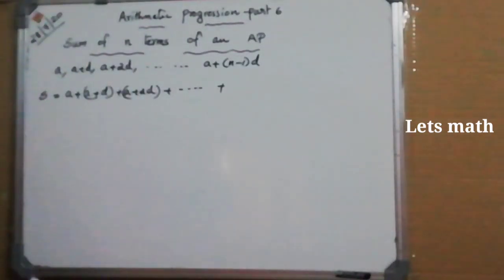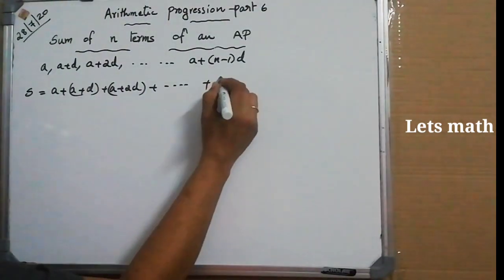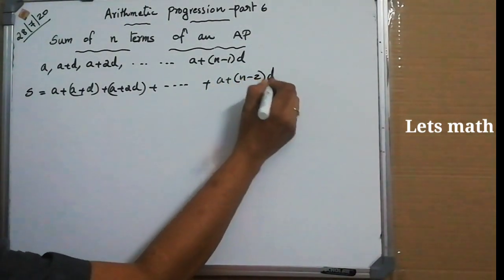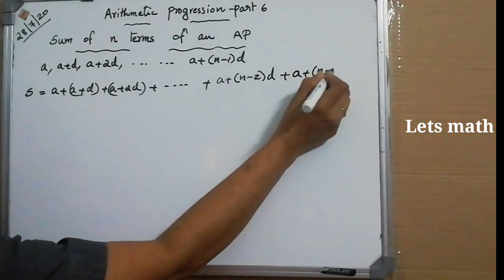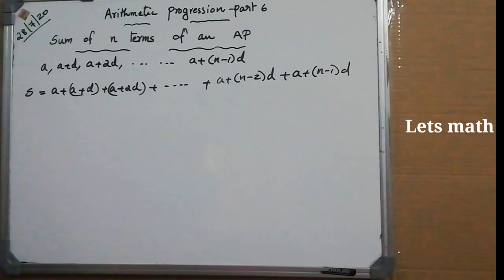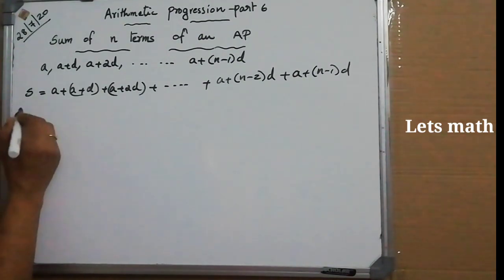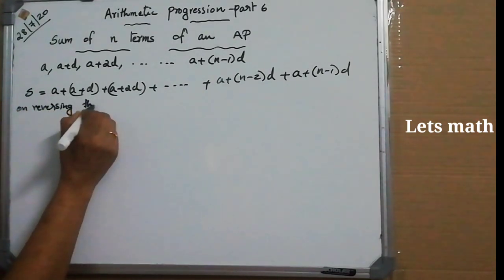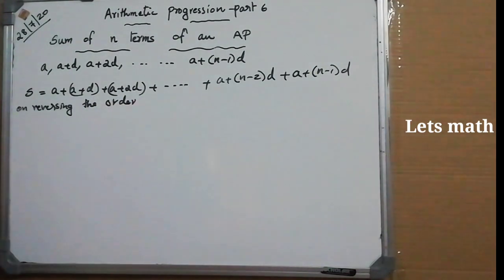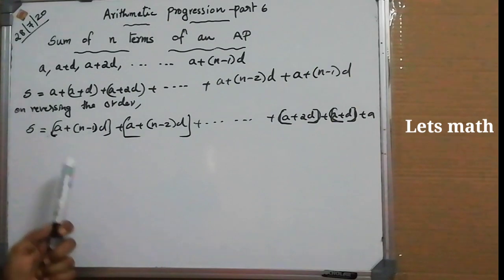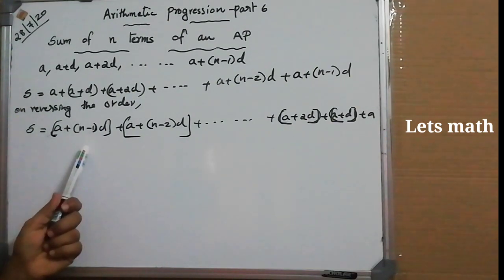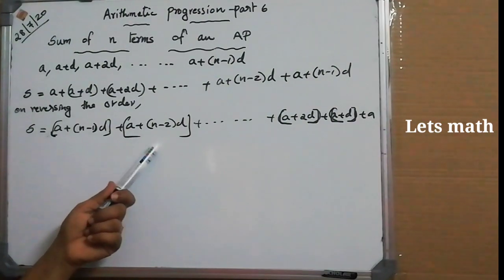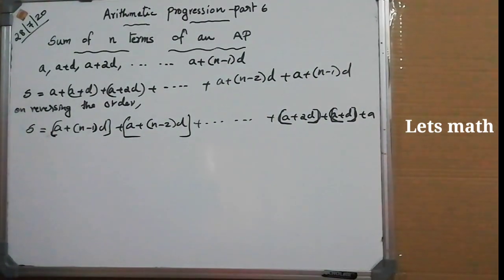The term just preceding the last is A+(N-2)D, and the last term is A+(N-1)D. Writing the same AP in reverse order: S = [A+(N-1)D] + [A+(N-2)D] + ... + (A+2D) + (A+D) + A.